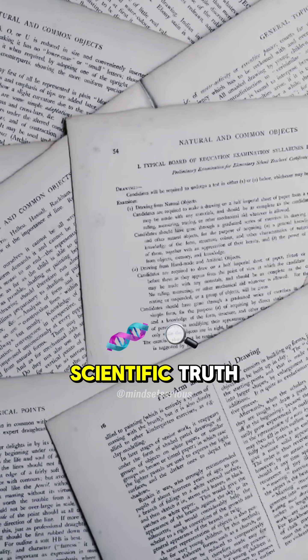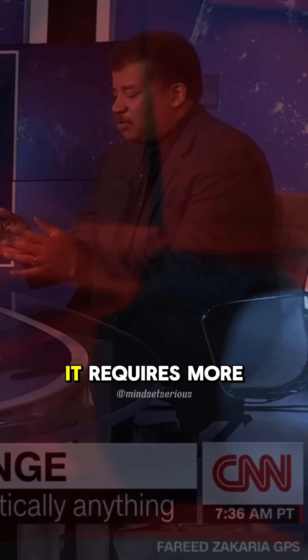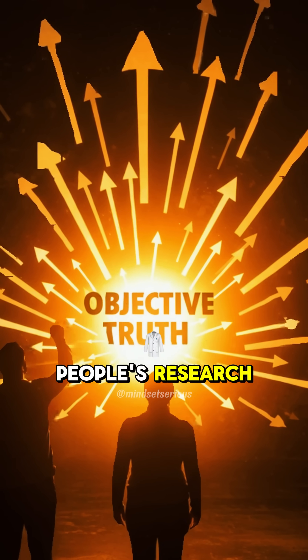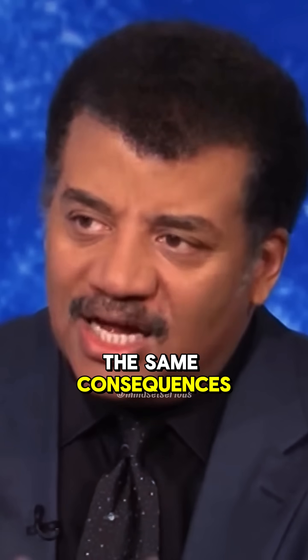But an emergent scientific truth, for it to become an objective truth—a truth that is true whether or not you believe in it—it requires more than one scientific paper. It requires a whole system of people's research, all leaning in the same direction, all pointing to the same consequences.